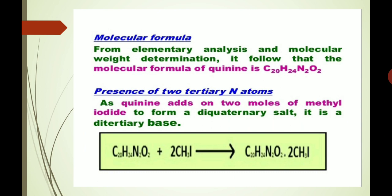It contains two nitrogen atoms. We have to ascertain the nature of these two nitrogen atoms. It has been found that both nitrogen atoms are tertiary in nature, as quinine adds two moles of methyl iodide to form a diquaternary salt. It is a ditertiary base, as represented in this reaction.